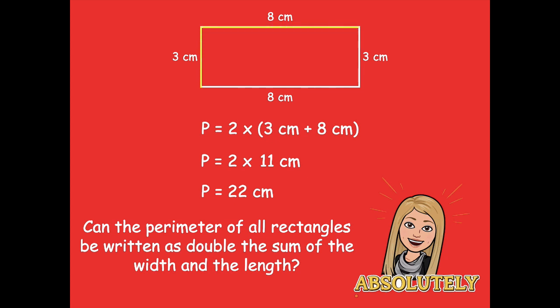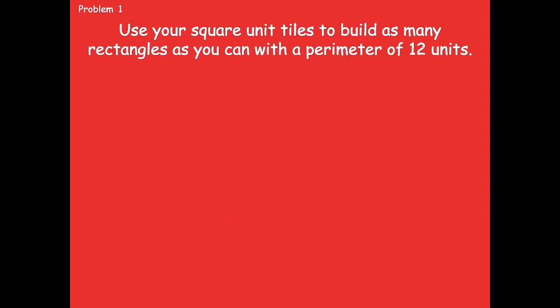Notice here: if we have 3 plus 8 and we double it, we're also adding in the other two sides. When you have the yellow sides, you double them to also get the blue sides — the yellow and the blue together are how you get your perimeter. All right, so here's our problem for problem one. Let's see how knowing this strategy — doubling the sum of the side lengths — helps with problem one.